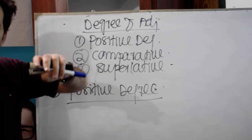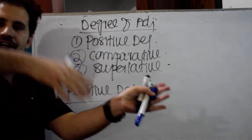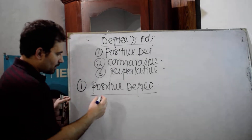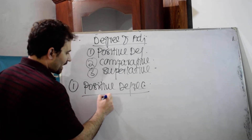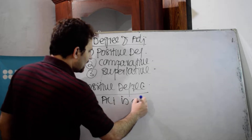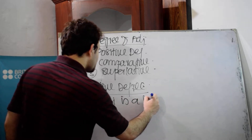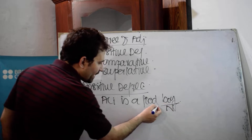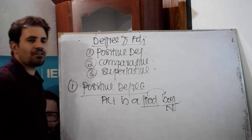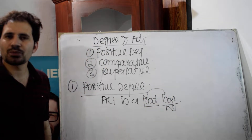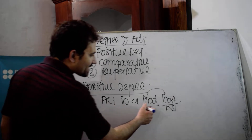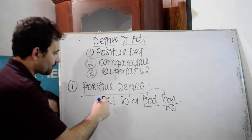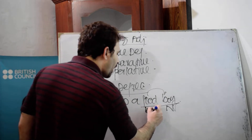The positive degree of an adjective talks about either the positive or negative quality of a noun. For example, 'Ali is a good boy' — here 'good' talks about the positive quality of the noun. So 'good' is called the positive degree of an adjective. If I say 'Ali is a bad boy,' it talks about the negative quality of the noun.